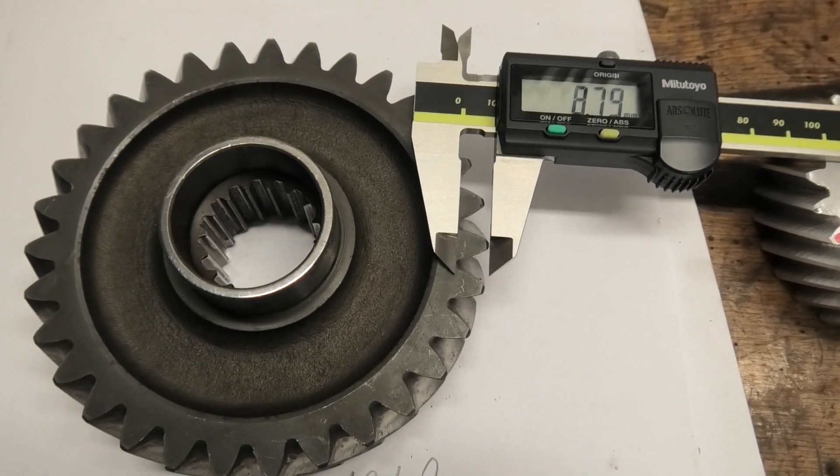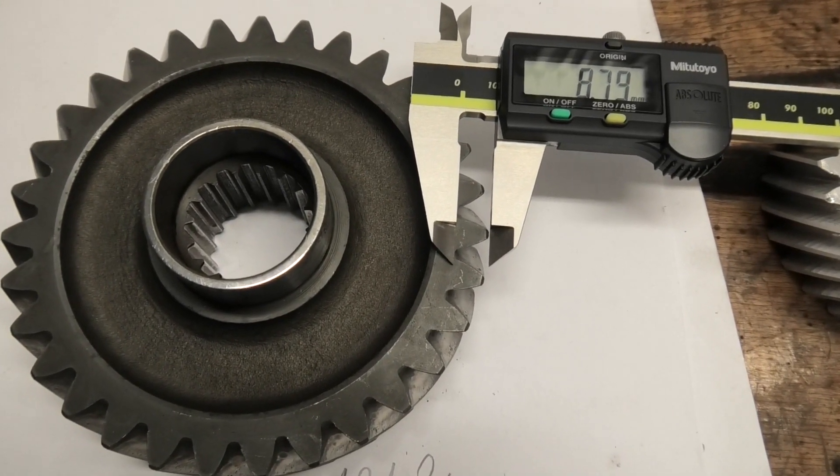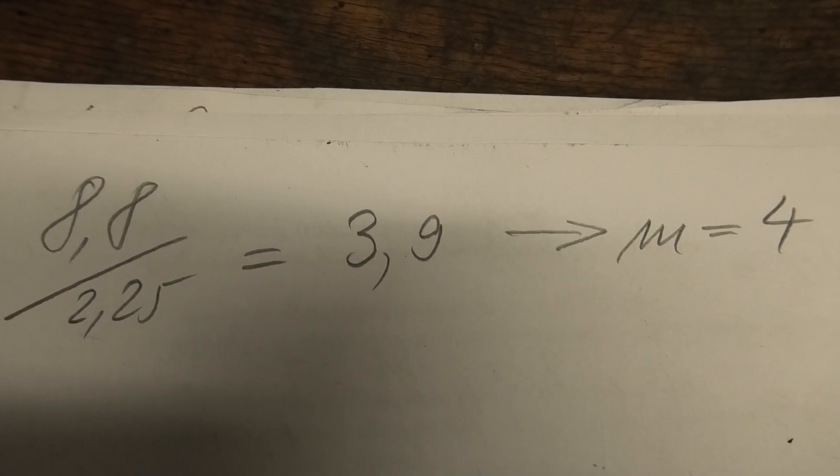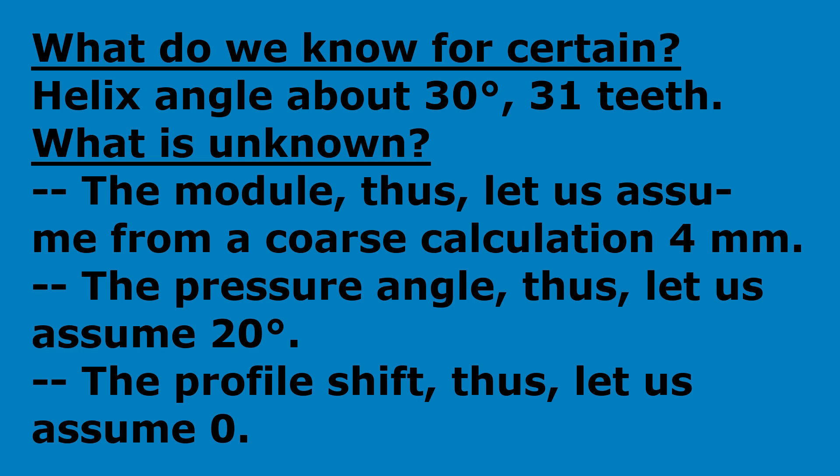Let us try to guess the module by measuring the height of the teeth. Regarding German Standard DIN 3960 the height of a tooth is 2.25 times the module. What do we know for certain? Helix angle about 30 degrees, 31 teeth.